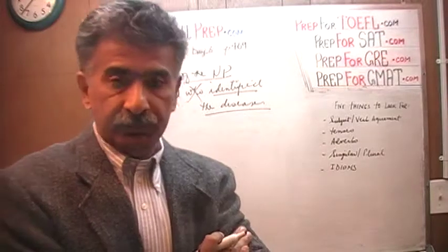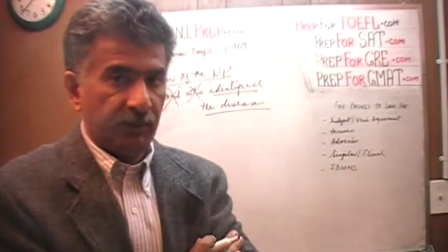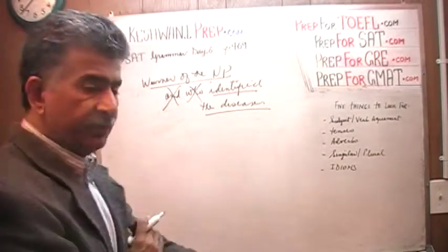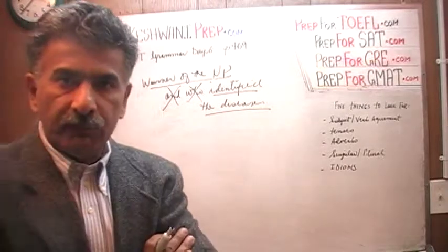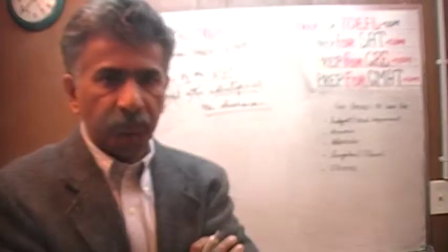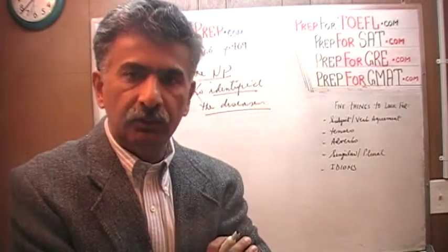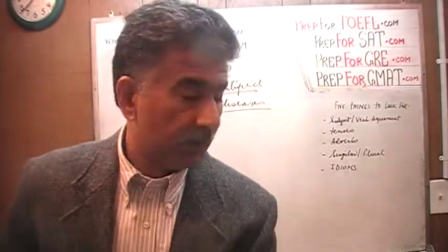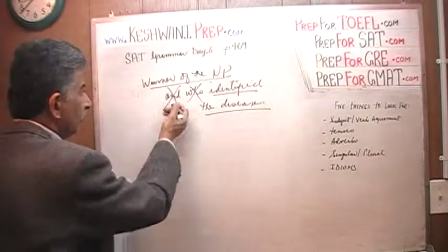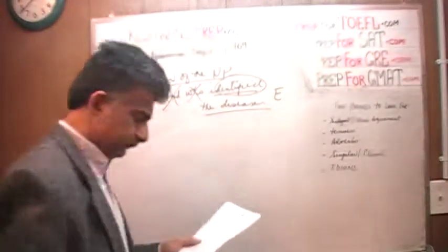Always cover your answer choices. I just remembered — I hadn't told you this yet. When doing grammar questions, always cover the answer choices. Do not look at them until you know what you're looking for. Now lift your hand and pick the answer choice that comes closest to what we said. We got rid of 'and who' and just kept 'identified.' That's answer choice E.